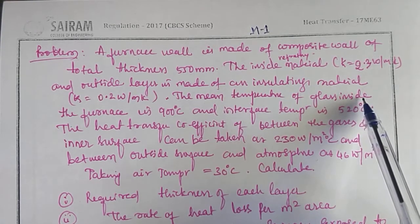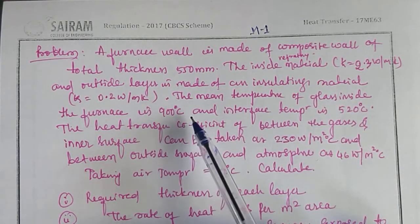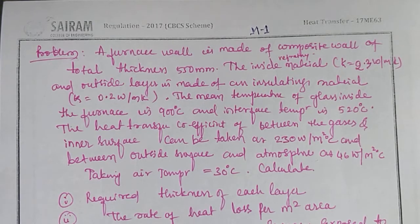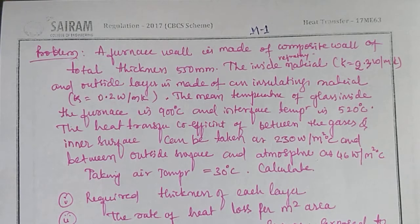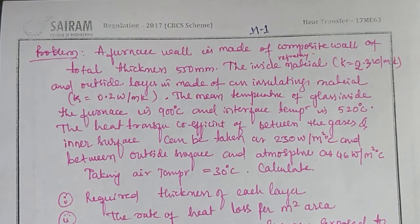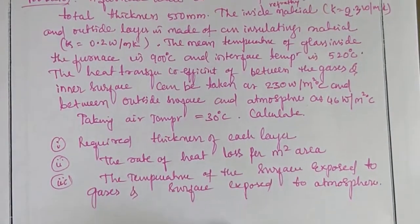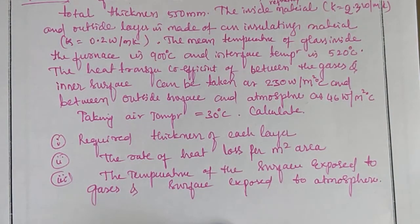The mean temperature of the gas inside the furnace is 900 degrees centigrade and the inner face temperature is 120 degrees centigrade. The heat transfer coefficient between the gas and inner surface is 230 watt per meter square degree centigrade, and between the outside surface and atmosphere is 46 watt per meter square degree centigrade. The ambient temperature is 30 degrees centigrade. We need to find the required thickness of each layer, the rate of heat loss per meter square area, and the temperatures of surfaces exposed to the gases and atmosphere.